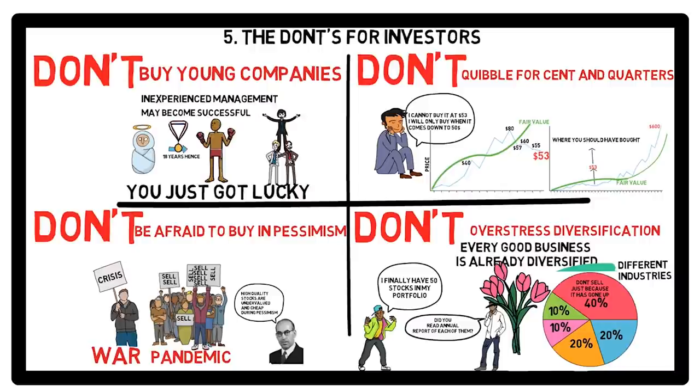Don't overstress diversification. The number of stocks in your portfolio is immaterial if you do not know anything about the business. Phil recommends to own not more than five stocks with an allocation of not more than 20% each. And if any of it grows more than 20%, then don't reduce the size to make it 20% again. Rather, let it be like that, because never cut your flowers, nurture them. That's it guys.